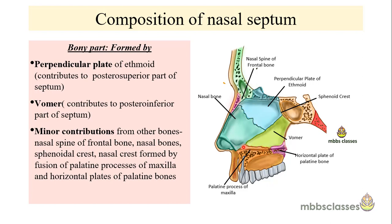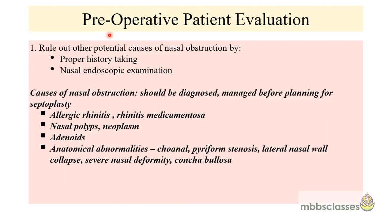The bony and cartilaginous septal floor is stabilized in a groove on the maxillary crest. In the context of septoplasty, remember that the cartilage has dense fibrous attachment to the bones, and the areas of cartilage-bony junctions are most susceptible to mucosal tear while performing septoplasty.